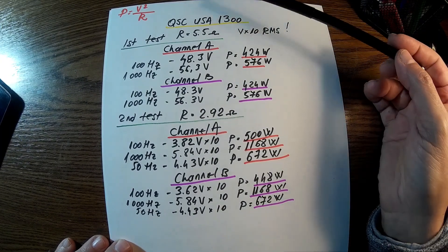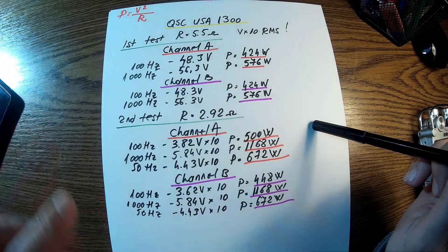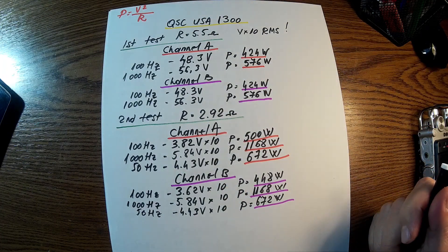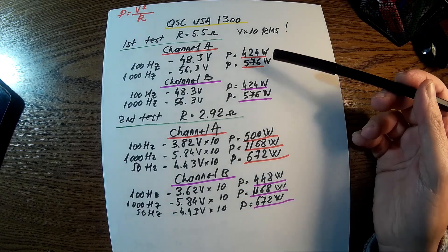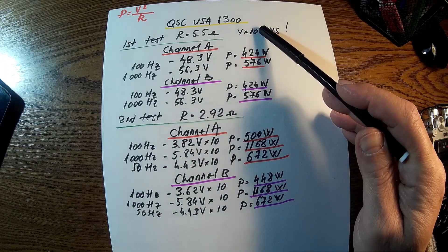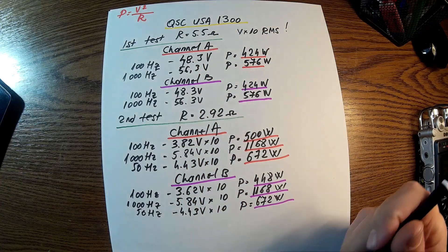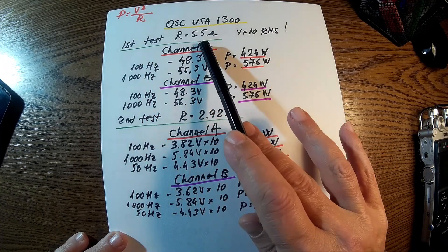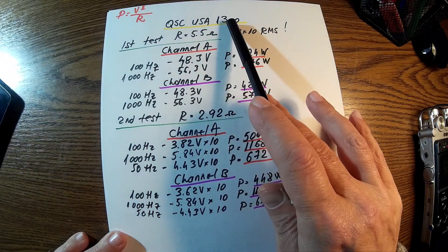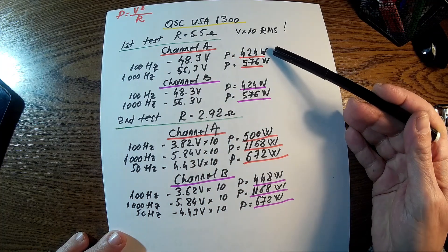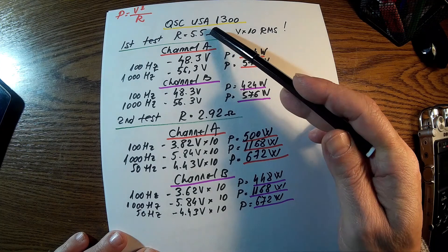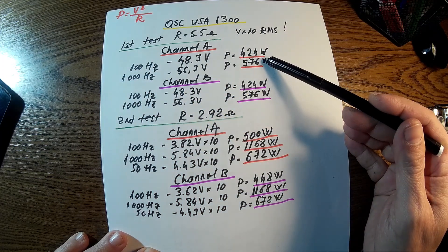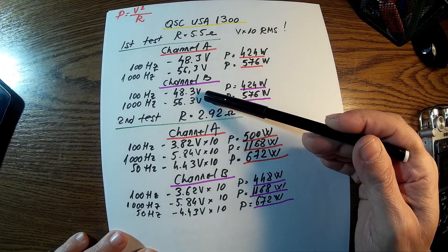Here we have the numbers. I used the formula P equals voltage squared divided by the resistance. We have really interesting results. Of course, the voltages here are 10 times more because we had that divider for the oscilloscope. 100 Hz channel A, QSC USA 1300, we have 424 watts with 5.5 ohms. It's very okay. 1000 Hz, 576 watts. Beautiful. Channel B, the same, so they are very equal for 5.5 ohms.